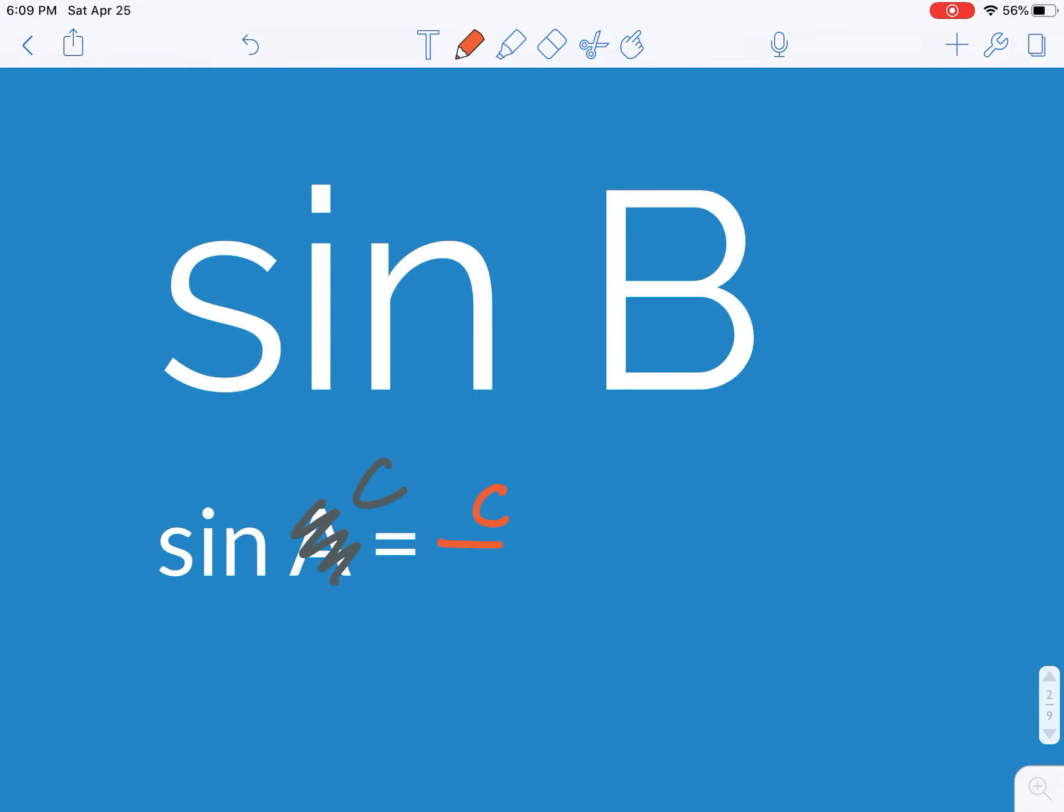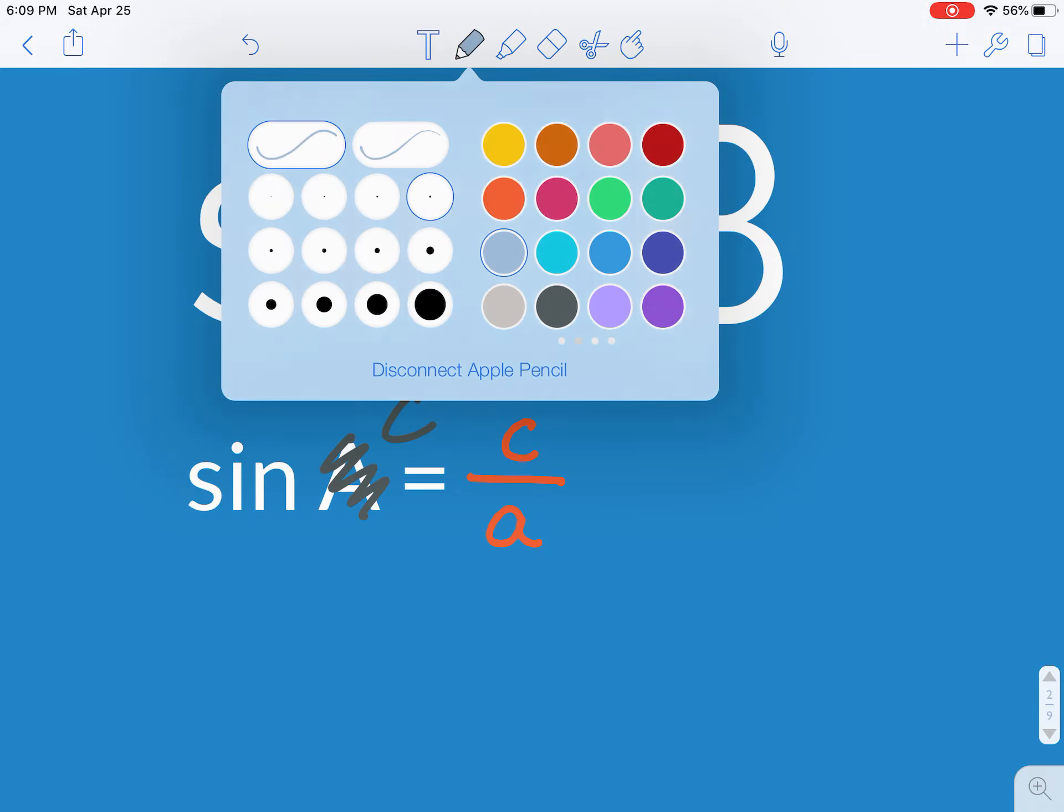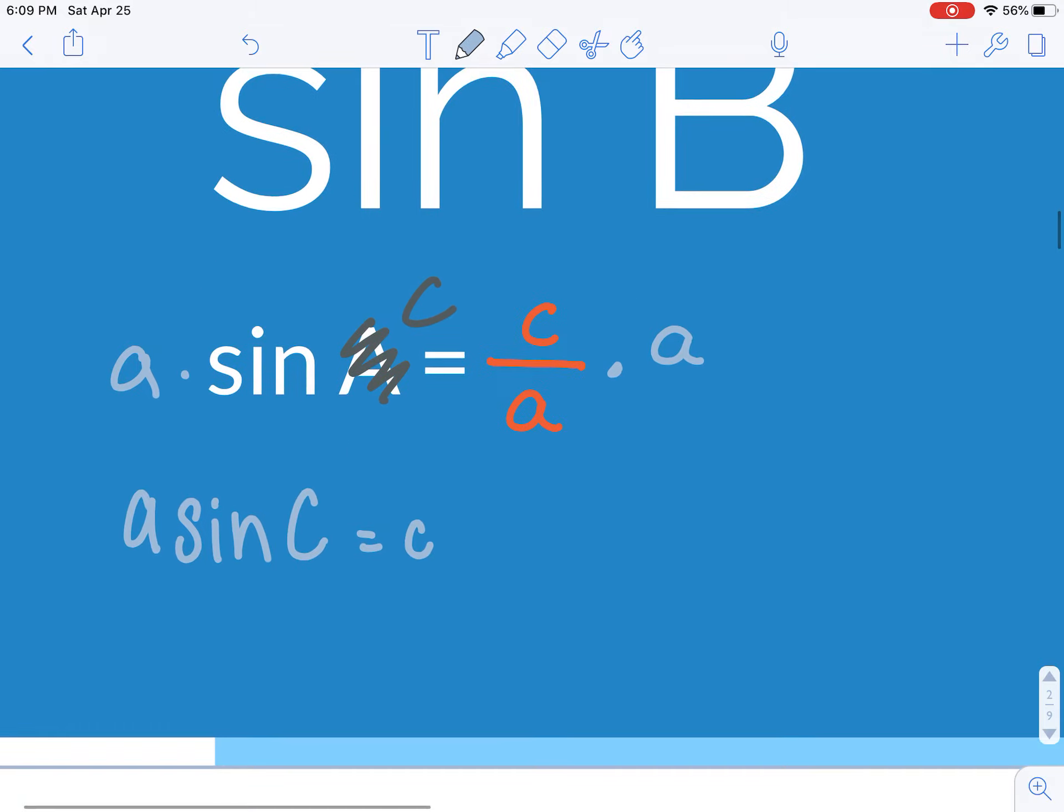So that will be little c over A. And before I find the sine of B, I'm going to do something kind of weird. I'm going to multiply both sides by A. So I get A times sine of C equals little c, and I'm going to divide by sine of C.